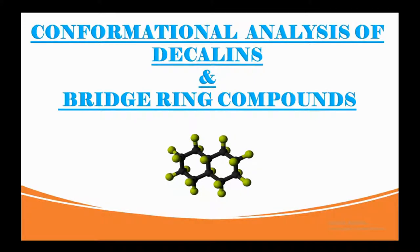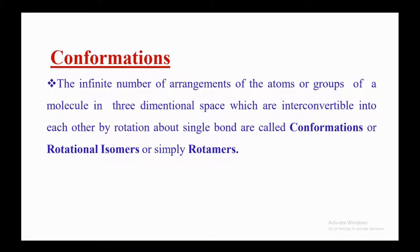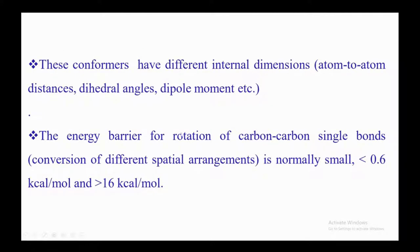Conformation: the infinite number of arrangements of the atoms or groups of a molecule in three-dimensional space, which are interconvertible into each other by rotation about a single bond, are called conformations or rotational isomers, or simply rotomers. These conformers have different internal dimensions, atom-to-atom distances, different dihedral angles, and different dipole moments.